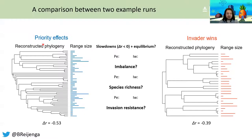What we find is that under both the priority effects and the invader wins scenario, the diversification rate slows down through time. This also means that we reach an equilibrium species richness under both models. Secondly, what we observe is that under priority effects, the phylogeny is highly imbalanced, with most species diversity concentrated in single lineages, whereas diversity is distributed very evenly under the invader wins scenario.